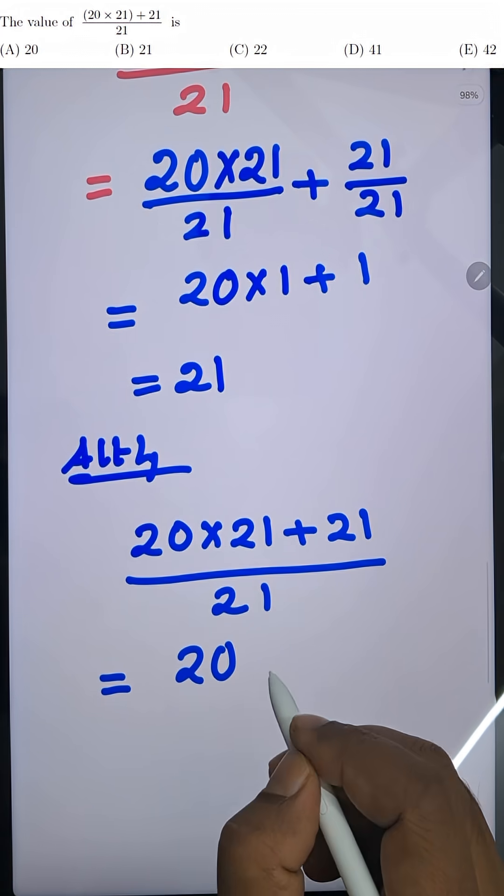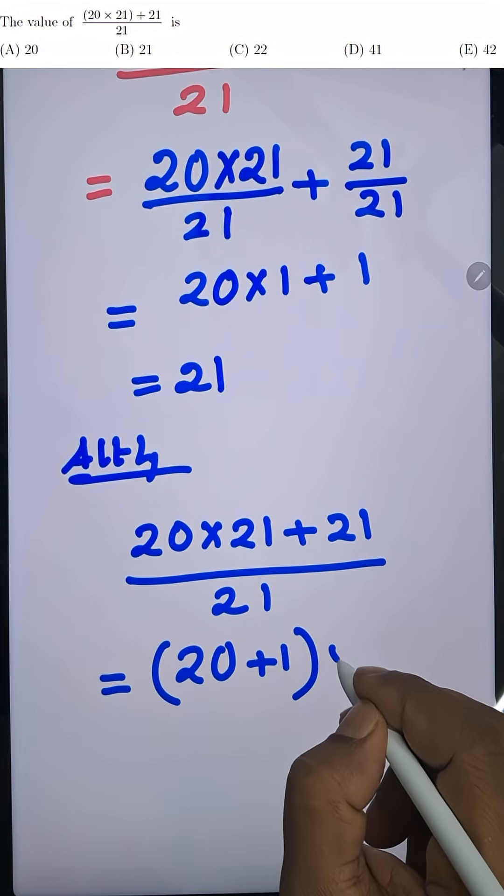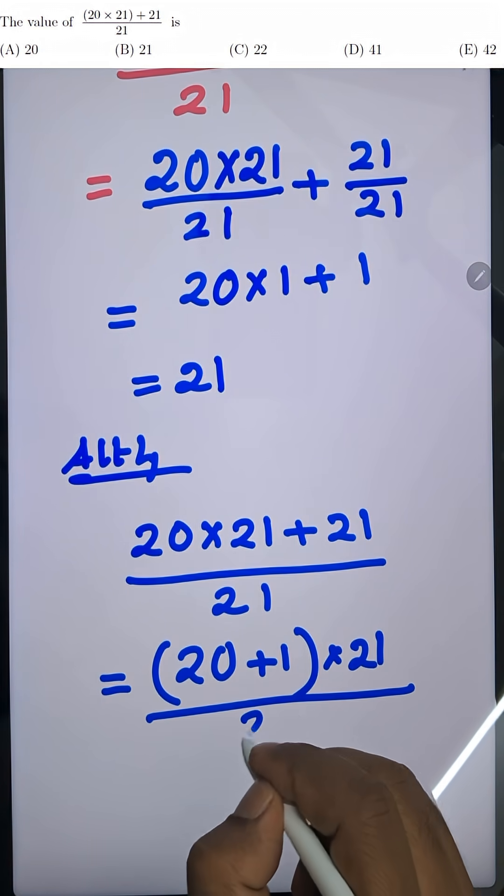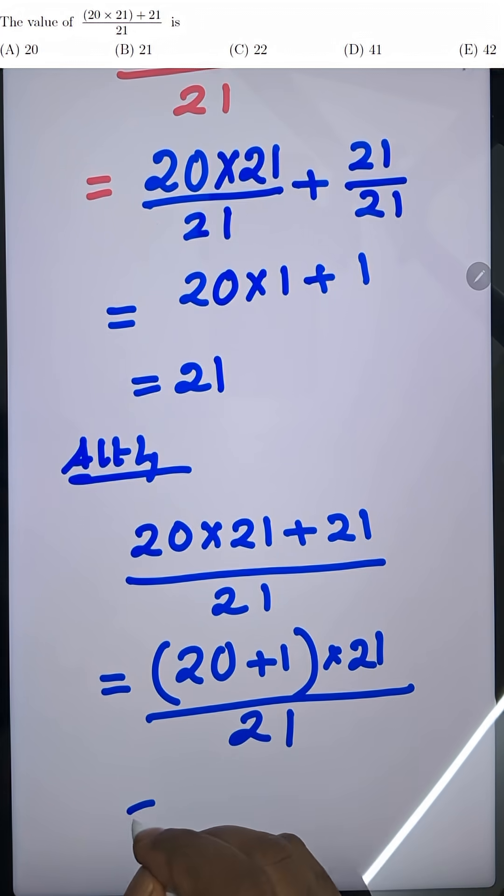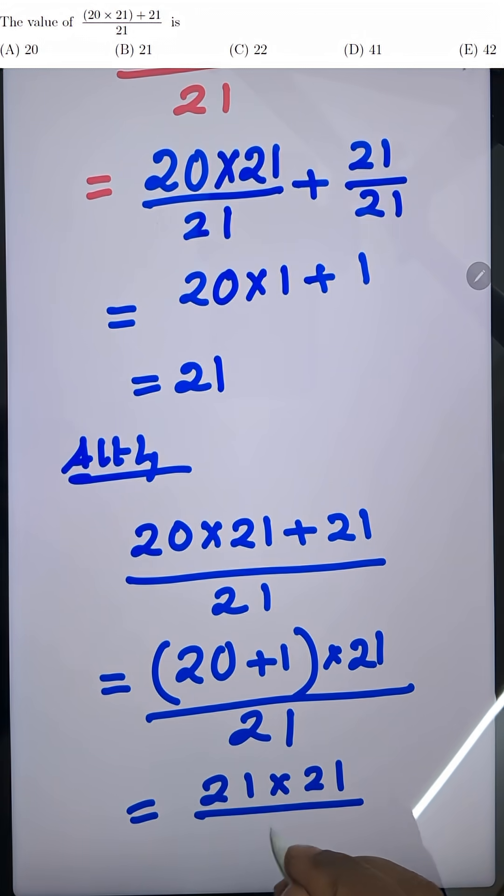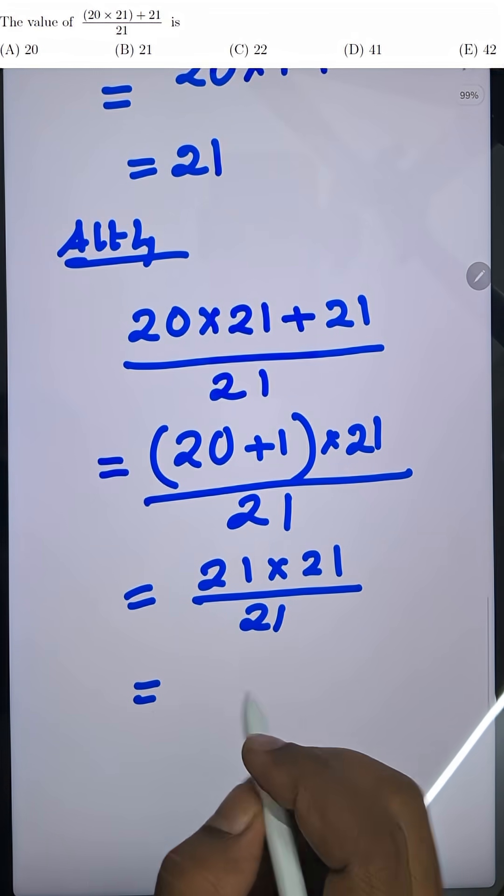That becomes 20 plus 1 multiplied by 21 all over 21. So now we have 21 multiplied by 21 divided by 21. 21 cancels out from the top and bottom, and we are left with just 21.